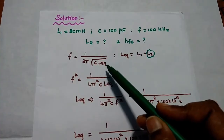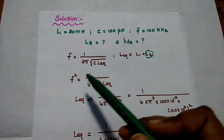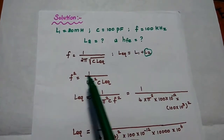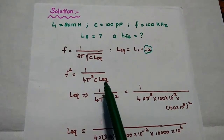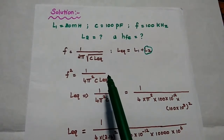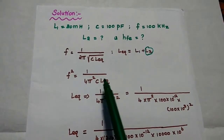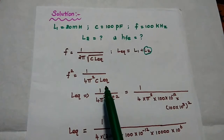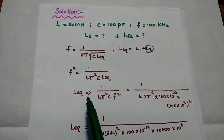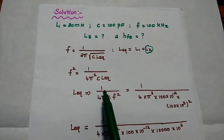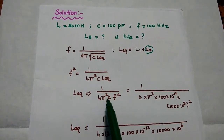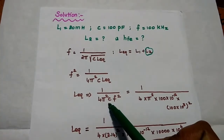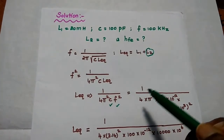L_equivalent is inside the square root, so we square both sides: F squared is equal to 1 divided by 4π squared times C times L_equivalent. Then we move L_equivalent to one side and F squared to the other, giving us L_equivalent is equal to 1 divided by 4π squared times C times F squared. We know the values of C and F, so we substitute those values.